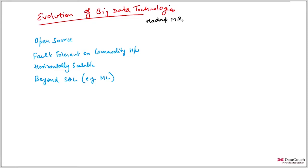Hadoop MapReduce had one problem: it was not having any SQL interface and there was no optimization. That was a miss — no SQL interface and no optimization. So while we are moving away from data warehouses, the problem is we don't have something on big data technologies that is open source, fault tolerant, horizontally scalable, and also supports workloads beyond SQL.